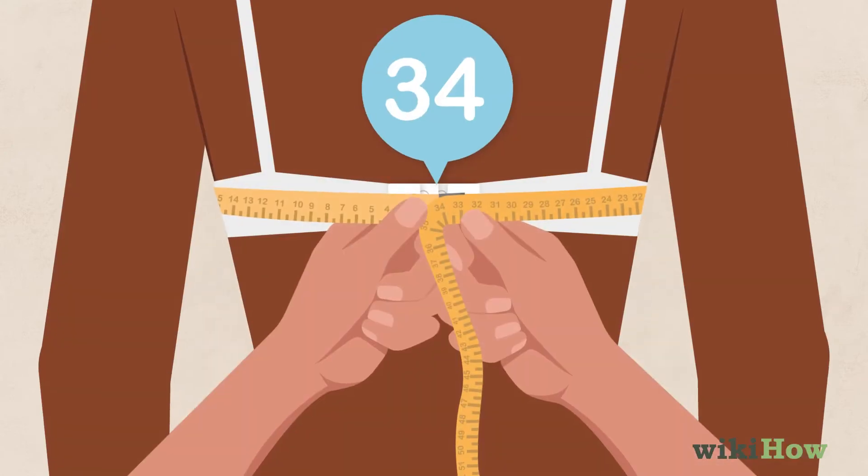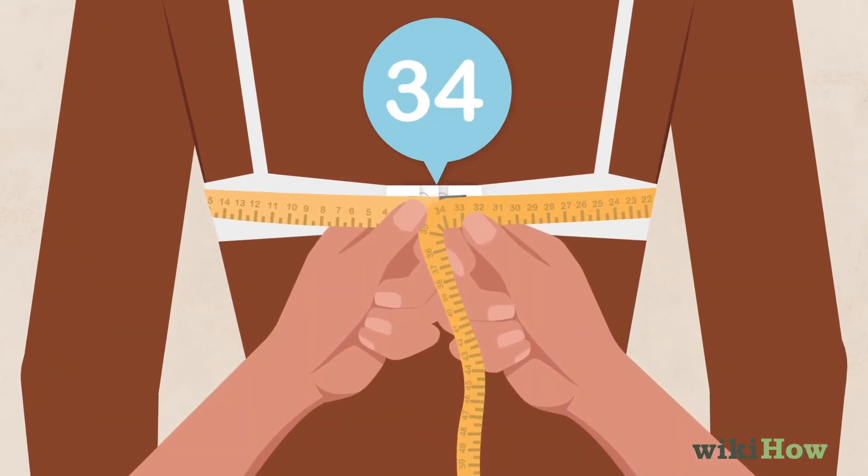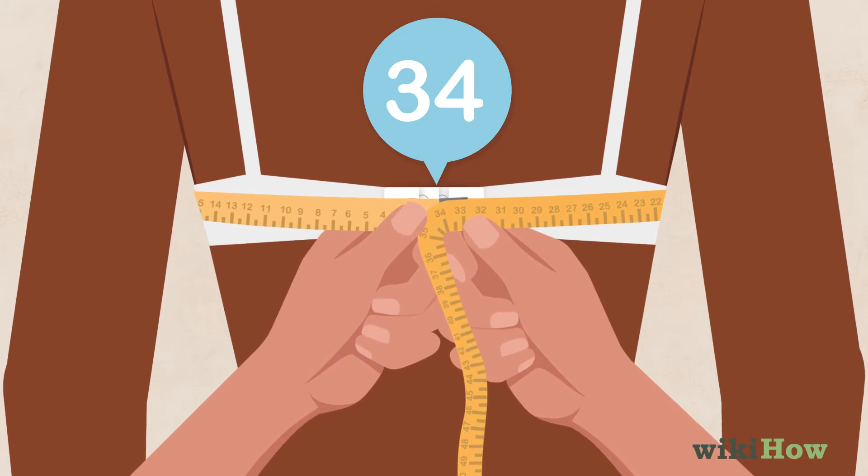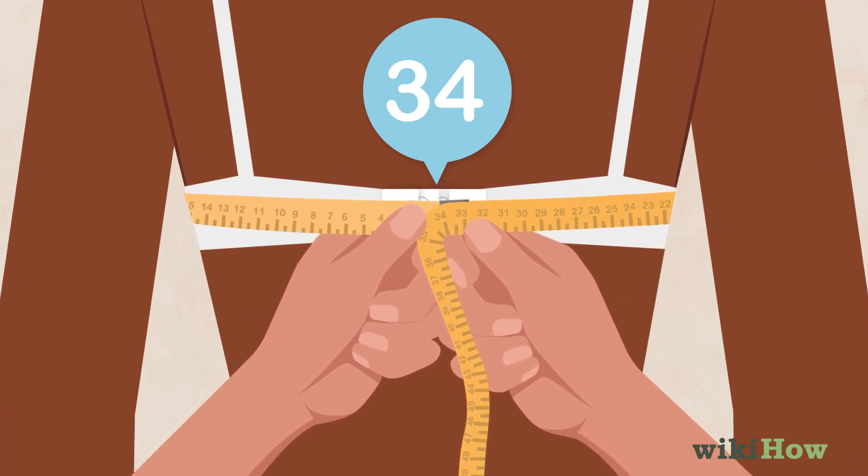Look for a spot where the end of the tape measure overlaps with the length that's wrapped around your chest, and read the number in that spot to find your chest size.